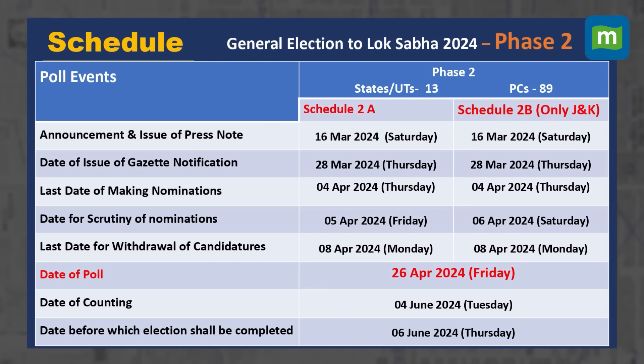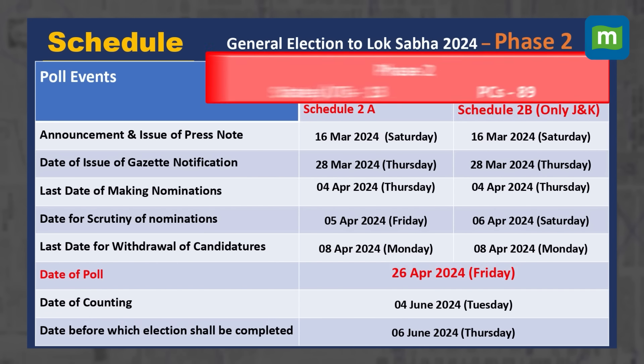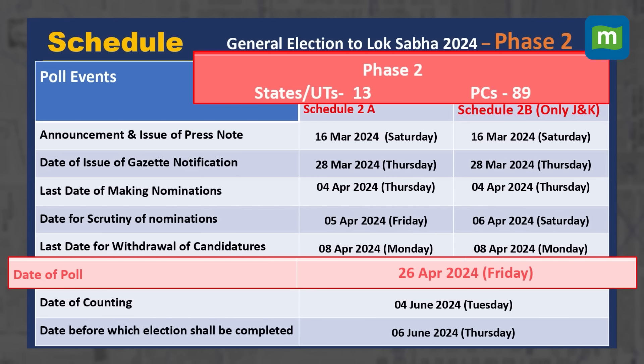The date for the poll for phase 2 is 26th April 2024. In phase 2, 13 states and union territories and 89 parliamentary constituencies will go under polling.